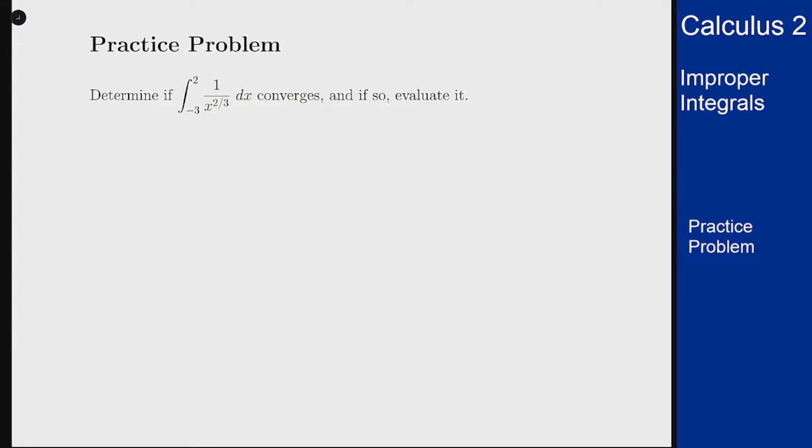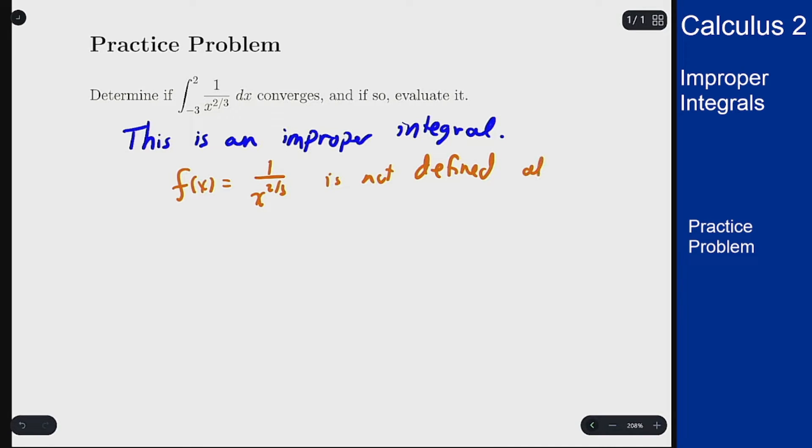The first thing to notice for a problem like this is that this is in fact an improper integral. The issue here is that the function f of x equals 1 over x to the 2 thirds is not defined at x equals 0 because the function tends to infinity there.